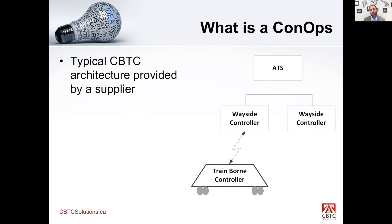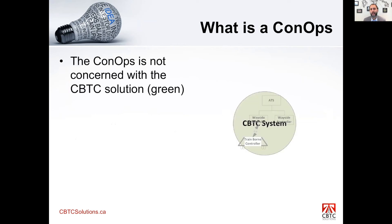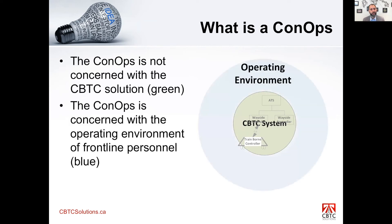If we look at a typical CBTC system, it has your ATS, your wayside controller, and your train-borne controller. If we confine that into a circuit and call it a CBTC system, this is what the supplier is providing to the transit agency. But the CONOPS is not concerned with the green part — it's only concerned with the blue part that's enveloping the CBTC system, the environment in which the CBTC system is going to reside within.